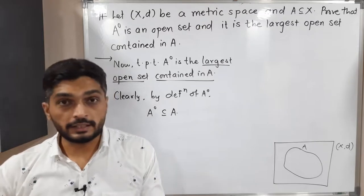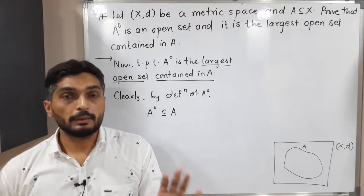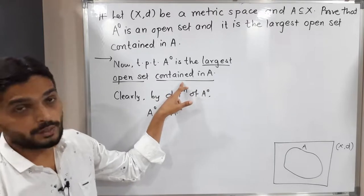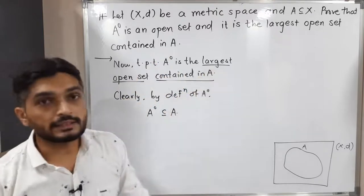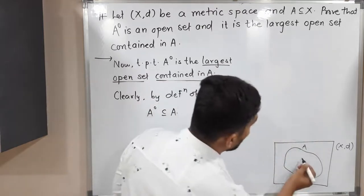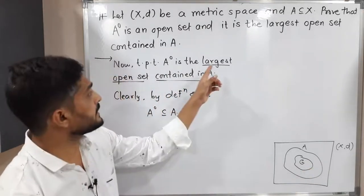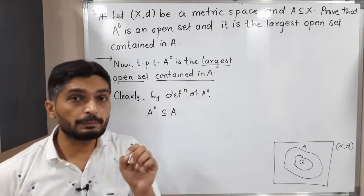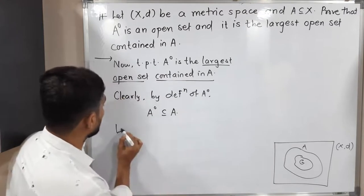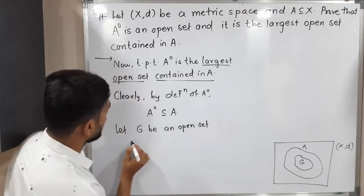If you remember the definition of A interior: we take points from A and check whether each is an interior point. If a point satisfies the condition then it is an interior point, but basically we take points from A. So obviously A interior is a subset of A, meaning it is contained in A — that task is also done. It is an open set we have already proved. So now we simply have to prove that it is the largest such set. To prove it is the largest, the technique is: we take any arbitrary open set G which is contained in A and prove that G ⊆ A interior. Let G be an open set contained in A.